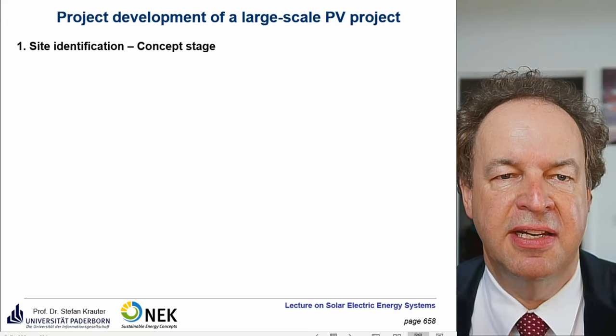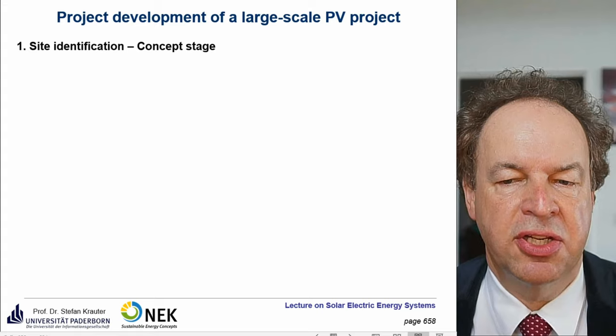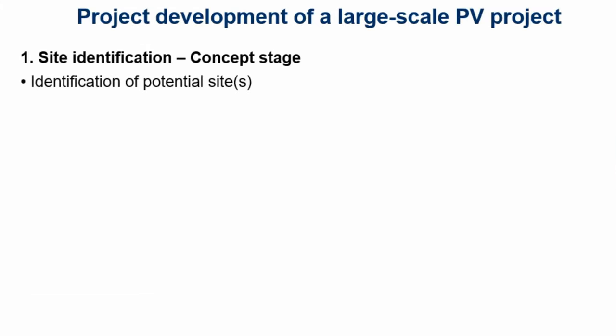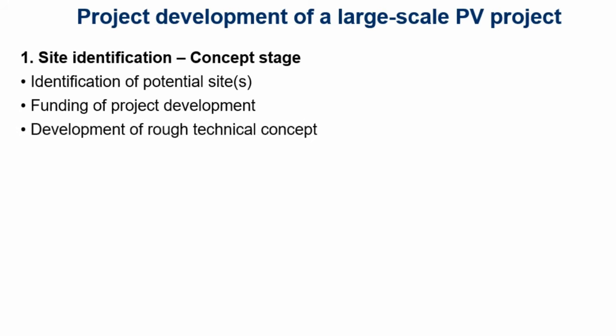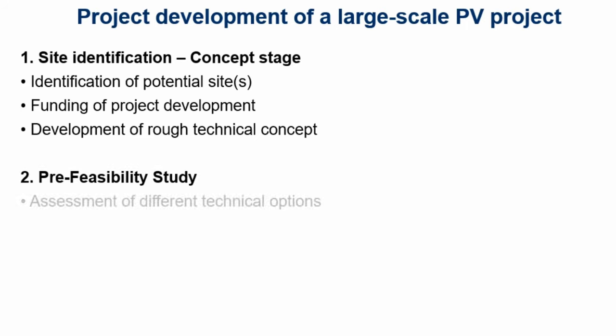Let's start with the site identification — the concept stage. We have the identification of potential sites, because you make a decision later after evaluating different options to find a suited place. Before financing, you have to determine who pays for the project development, since you have to pay engineers and spend time on it. Then you do a rough technical concept — a kind of pre-concept — and then a pre-feasibility study to assess different technical options.